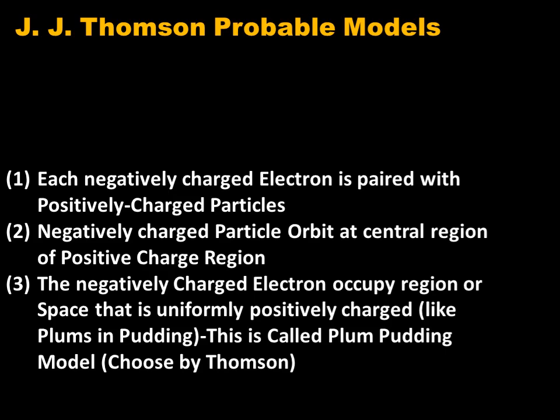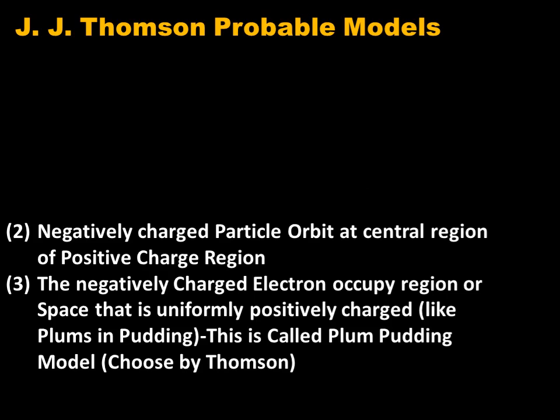In order to cancel out the negatively charged electrons, there should be positively charged particles inside the atom. Secondly, he proposed that negatively charged particles orbit at the central region of a positive charge region. This was the second proposed arrangement of negative and positive charges by J.J. Thomson.